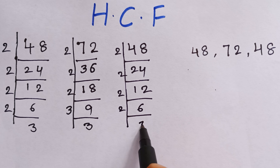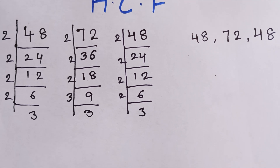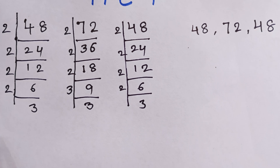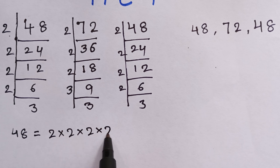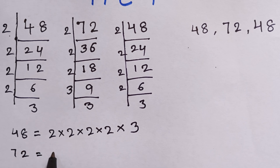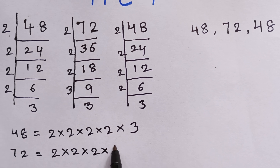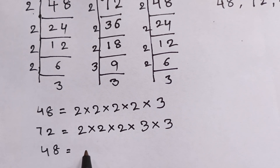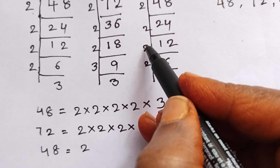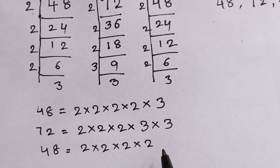For 48, we can write the factors as: two, two, two, four — so two twos and four twos and one three. For the next one, 72: two, two, two, two, two, two and three and three. And the final one, 48 again: one, two, three, four — two, three, four — and three.